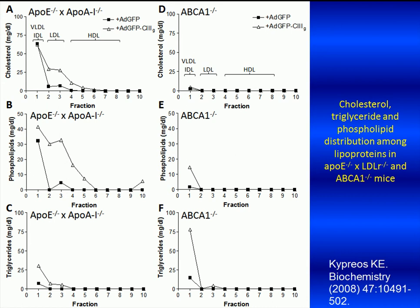However, ABCA1 single-deficient mice infected with the ADGFP C3 adenovirus showed that the increase in total plasma triglyceride levels was due to a dramatic increase in the triglyceride content of their VLDL and IDL fraction, and to a much lesser extent in their LDL fraction, compared to mice infected with the control adenovirus, as shown in panel F of this slide.